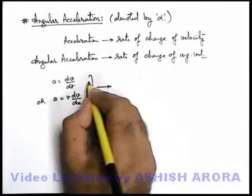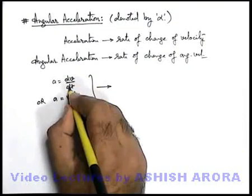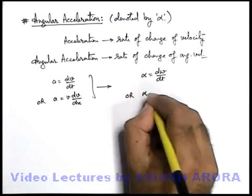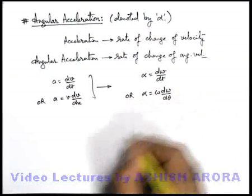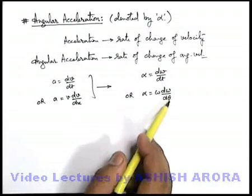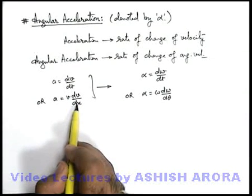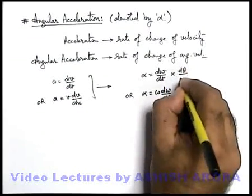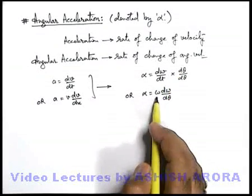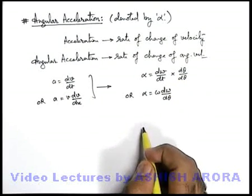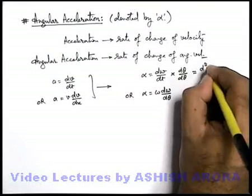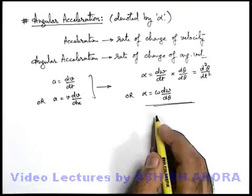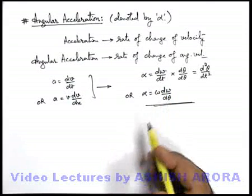We've already studied that angular velocity is denoted by the term omega. So the relation a = dv/dt can be rewritten as alpha = dω/dt. Or we can also define alpha as ω·dω/dθ, just like v·dv/dx can be written in the angular form using angular displacement. Alpha can also be written as the second derivative of angular displacement: d²θ/dt². So these are the relations we use to define angular acceleration in terms of angular velocity, time, and angular displacement.